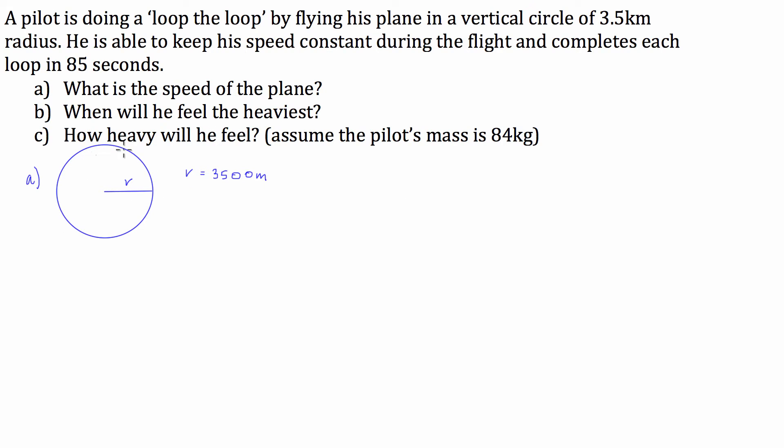We know that the time it takes him to complete a full circle is 85 seconds. So this is pretty simple. We know that the speed of any object is going to be the distance that it covers over the time that it takes it to cover it.